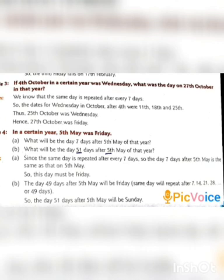Let's move to another example. In a certain year, 5th May was Friday. What will be the day 7 days after 5th May? Since the same day is repeated after every 7 days, the day 7 days after 5th May is the same as on 5th May — so this day must be Friday. For part B, what will be the day 51 days after 5th May? The day 49 days after 5th May will be Friday, as the same day repeats after 7, 14, 21, 28, or 49 days. So, the day 51 days after 5th May will be Sunday.